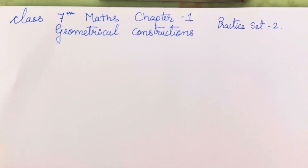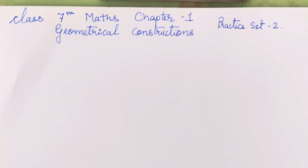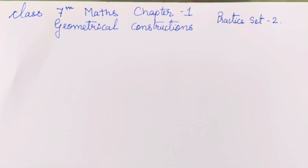Hello everyone, welcome back to my channel. Today we will be studying class 7 maths chapter number 1, geometrical construction practice set number 2. Before that, we have studied practice set number 1 — how to bisect an angle and the perpendicular bisector. Now we are going to construct triangles with the given measures.